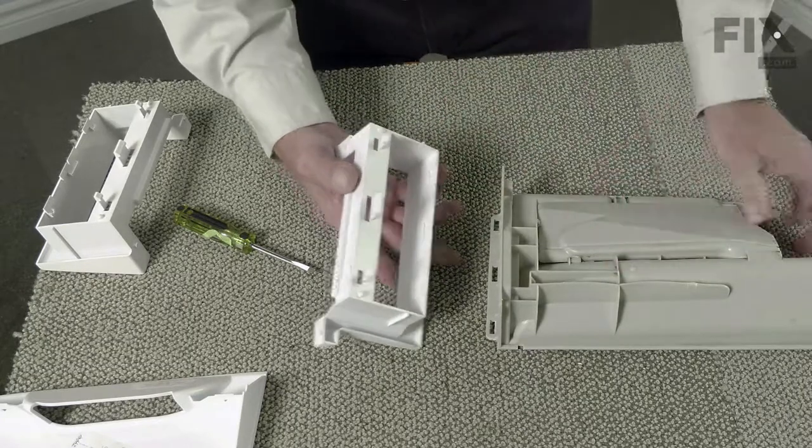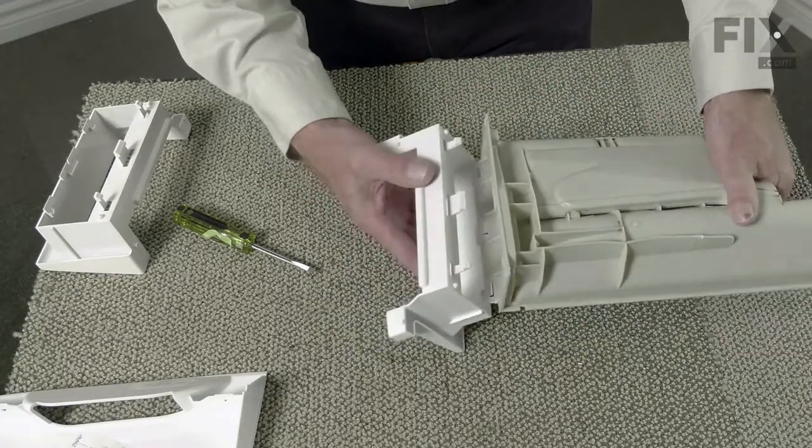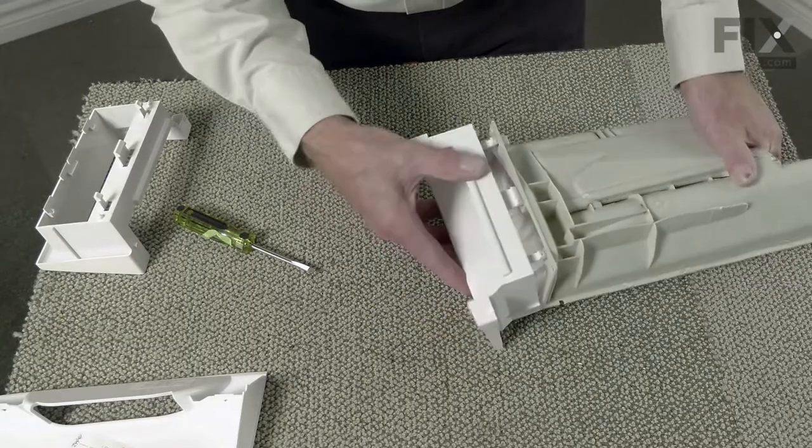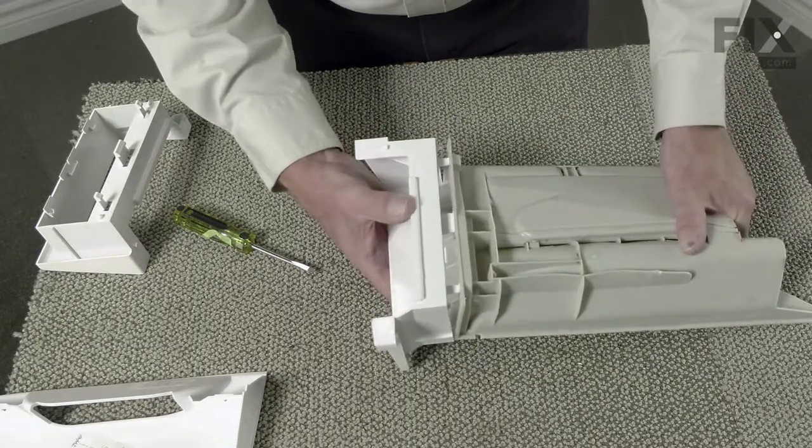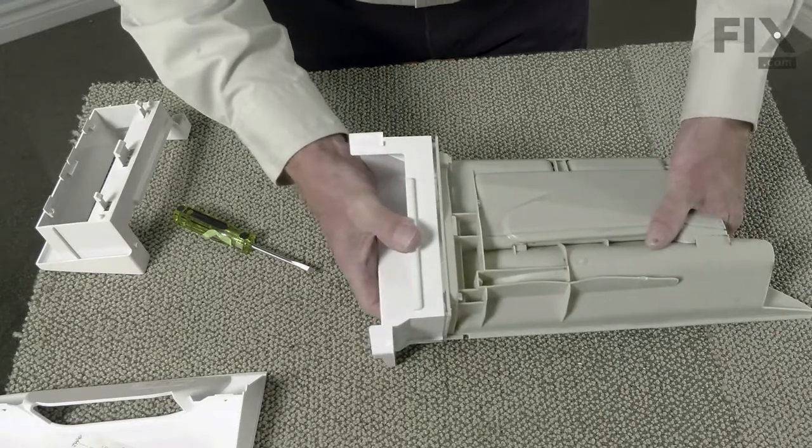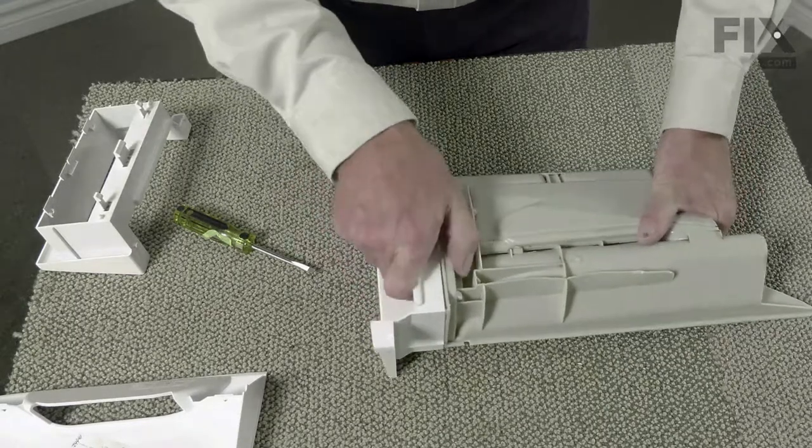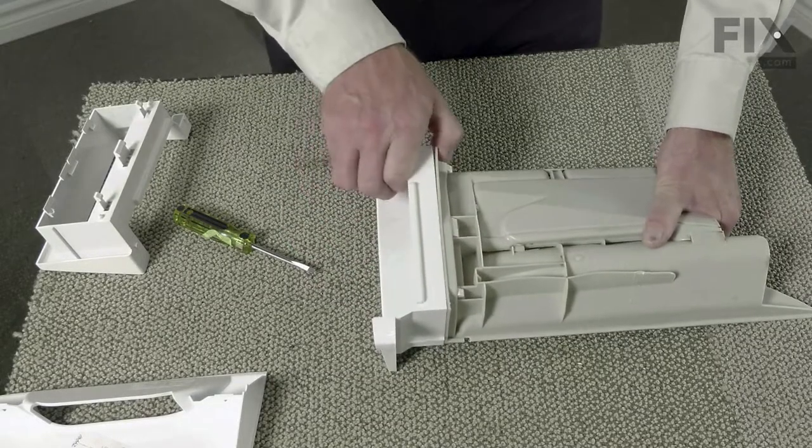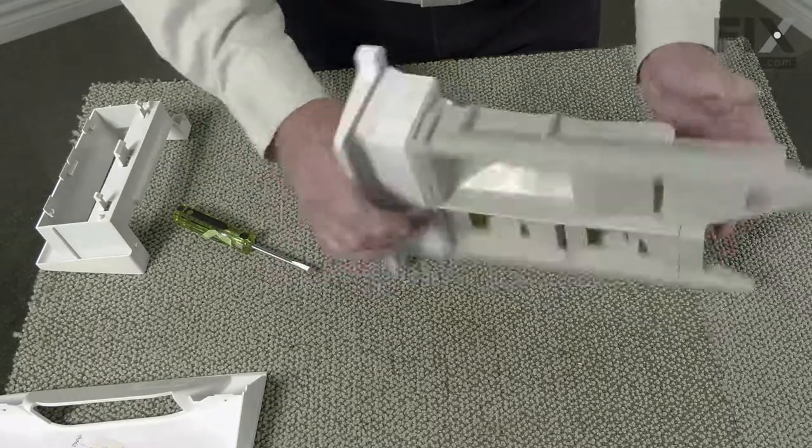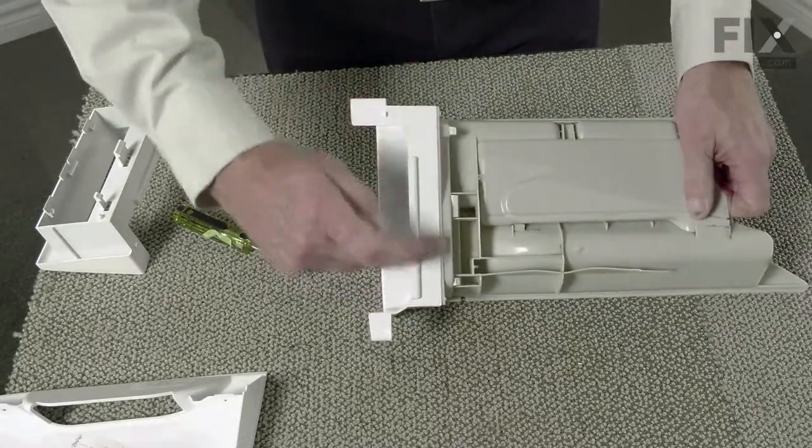We'll want to engage these tabs on the bottom. Line it up so that they're centered, and then just rotate it into place and snap the bottom in. It should be flush across the top and flush across the bottom.